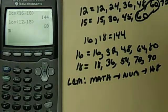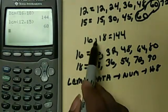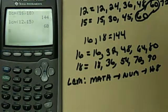And remember, we may have larger numbers like the one that we just did between 16 and 18, where the LCM was 144.